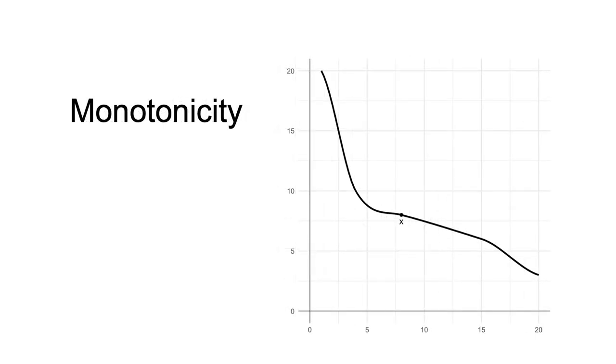Monotonicity. Preferences are monotone if more of any good in the bundle makes the agent strictly better off. Non-satiation is implied by monotonicity, but not the other way around.